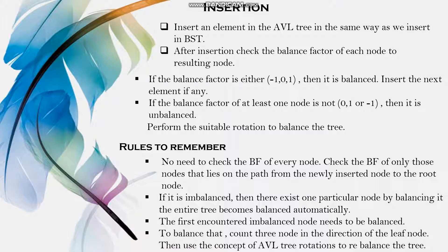Insertion: insert an element in the AVL tree the same way as in a binary search tree. Rules to remember while inserting: no need to check the balance factor of every node — check only those nodes that lie on the path from the newly inserted node to the root node. If it is imbalanced, there exists one particular node; by balancing it, the entire tree becomes automatically balanced. The first encountered imbalanced node needs to be balanced — count 3 nodes in the direction of the leaf node, then use AVL tree rotation to rebalance the tree.